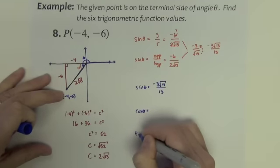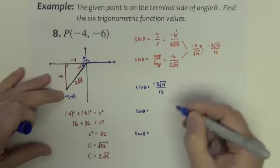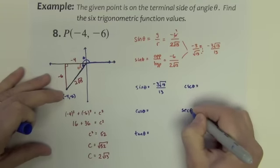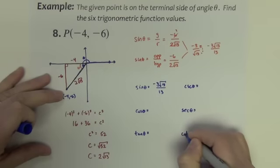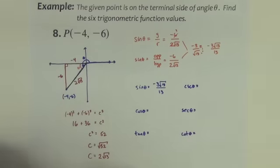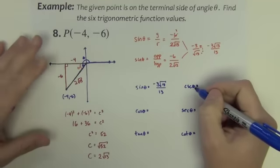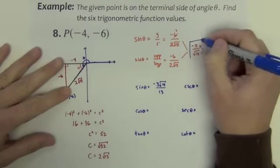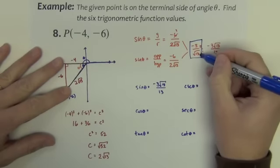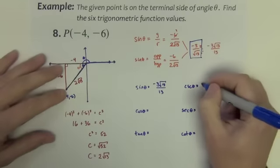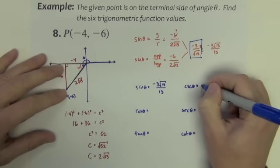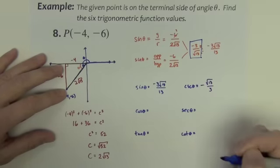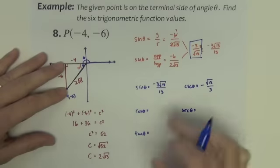Now we also want the other 5. Cosecant, let's just do it real quick. For cosecant, I'm going to take the most simplified form I had for sine, and I'm just going to flip it over. So I have negative square root of 13 over 3. So there's sine and cosecant done.